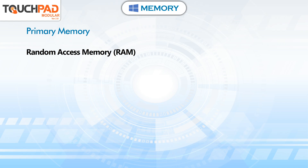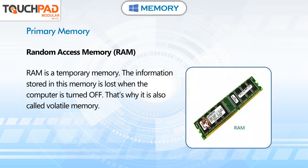Random Access Memory (RAM). RAM is a temporary memory. The information stored in this memory is lost when the computer is turned off. That's why it is also called volatile memory.